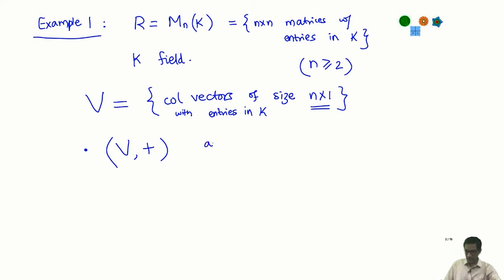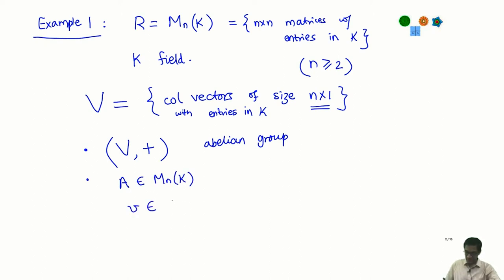We already have addition of column vectors, so this is an abelian group. What I want to do is define scalar multiplication. I take a matrix A in M_n(K) and an element V from my module, which is a column vector. I have to tell you how to define the scalar multiplication of A with the element V of the module.